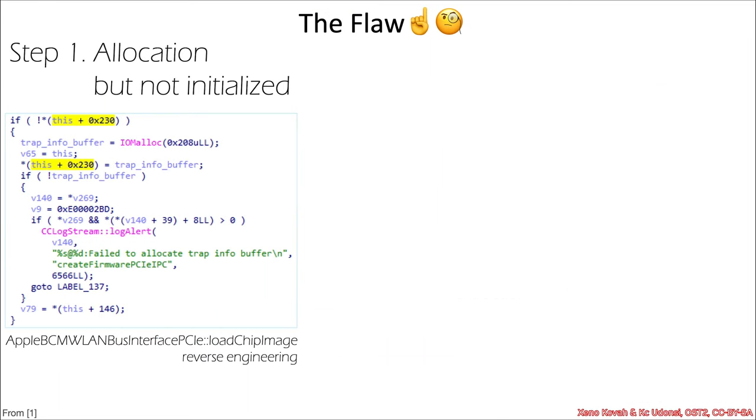So what was the flaw? Well, let's zoom in and let's take a look at this step one. It was allocation but not initialization. So we also said that there was race condition opportunities between functions running in the kernel.